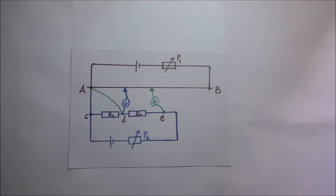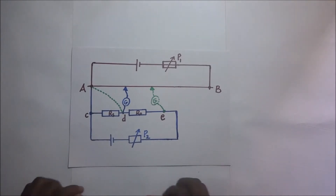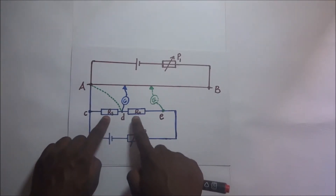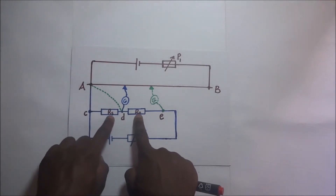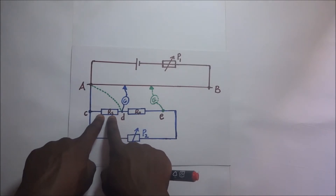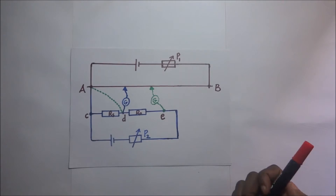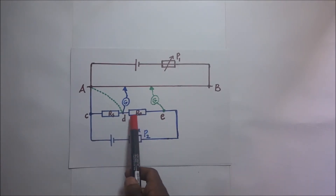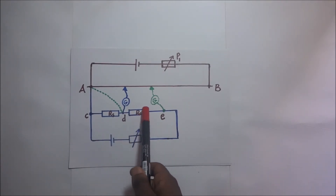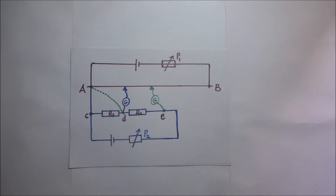How to use a potentiometer to compare resistances. The resistances we are trying to compare are RS, a standard resistor whose resistance we know, and R₀, whose resistance we do not know. We are going to use this potentiometer setup to compare these two resistances and hopefully determine the unknown resistance.